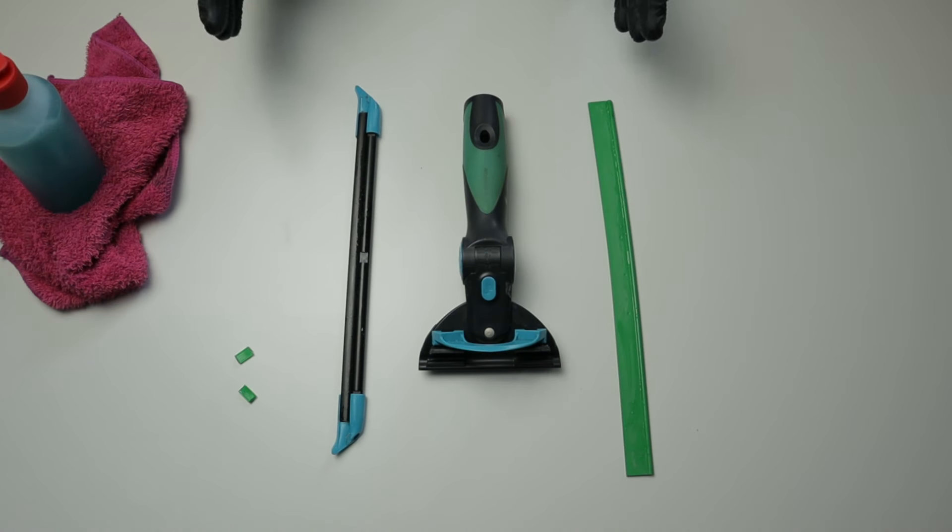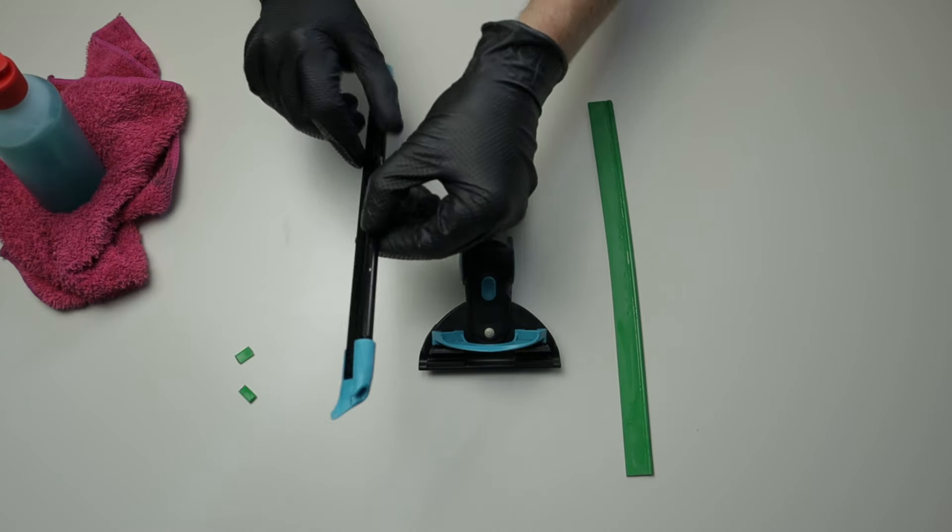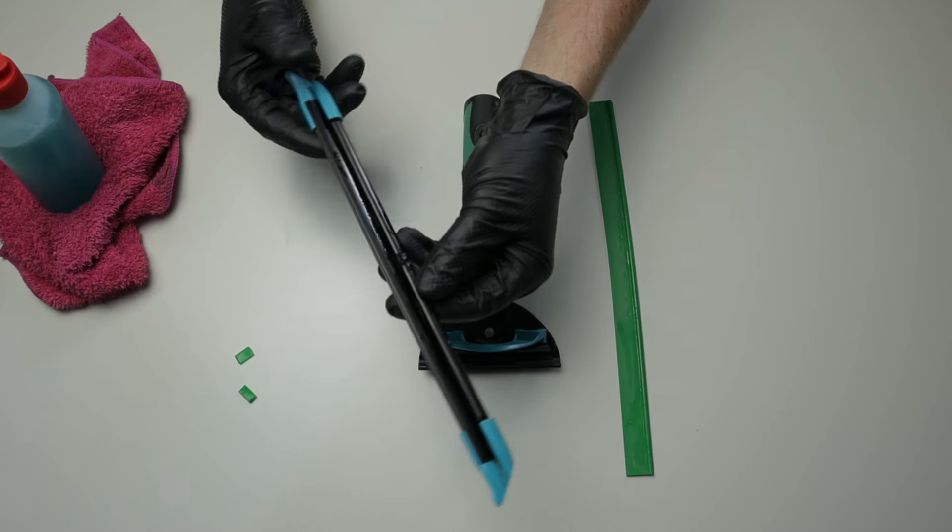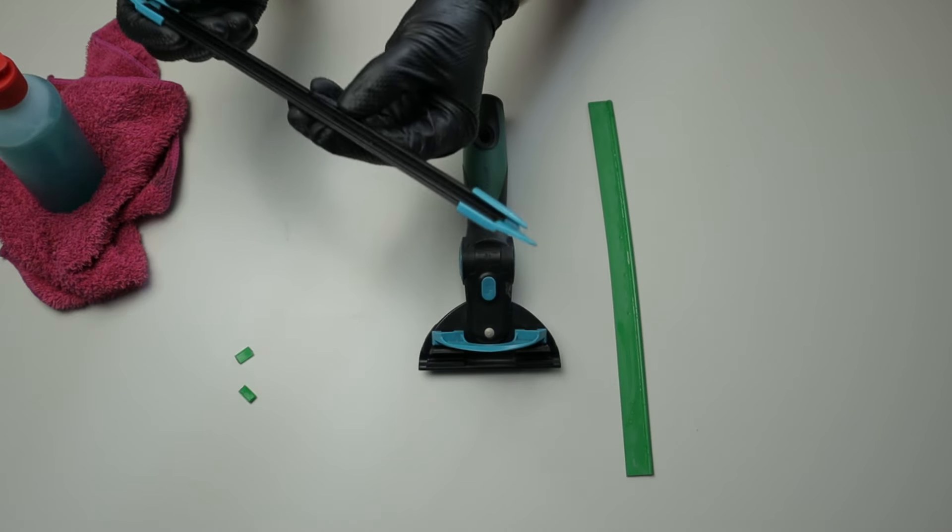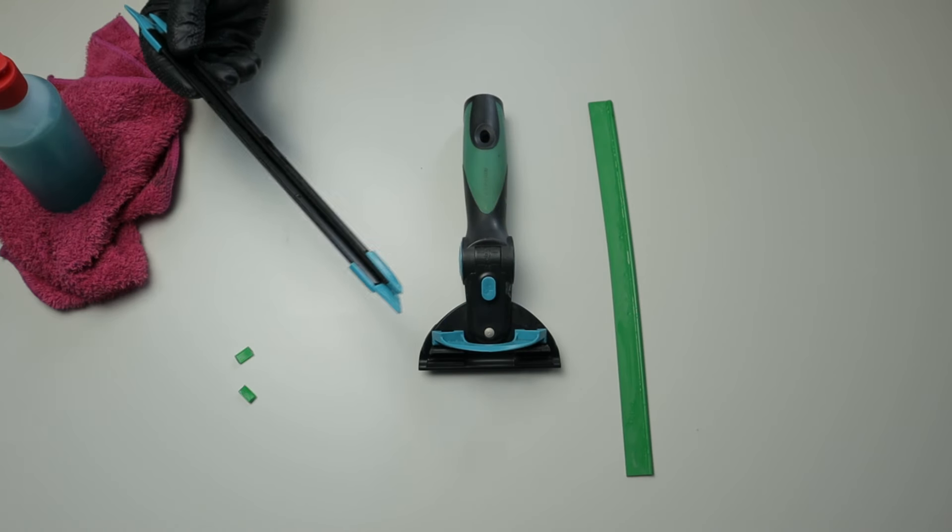Like in the previous video, we looked at how to set up the Unger squeegee. We're going to do this in a similar fashion. Now because of the end clips on this tool, it is quite a tight fit getting the rubber into this channel. So we're going to use our trick that we learned in the previous video, which was using detergent in that channel to get the rubber to glide.